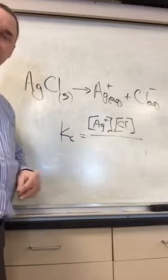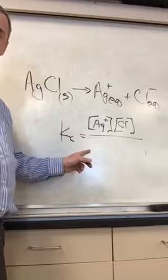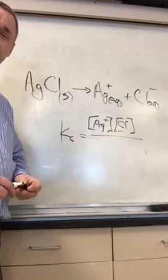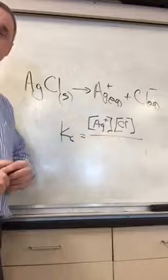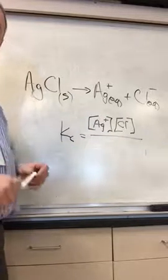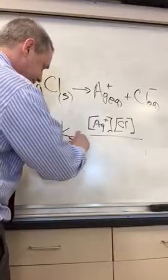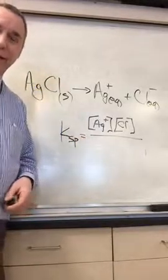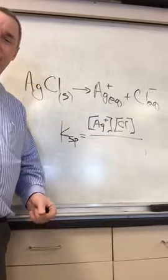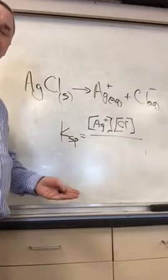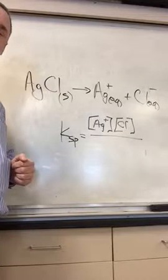So just remember that. This is it. The KC is just the concentrations of the dissociated ions. This is not KC. It's called KSP, and it's the solubility product. And it shows us how far will something dissolve when you put it in water.